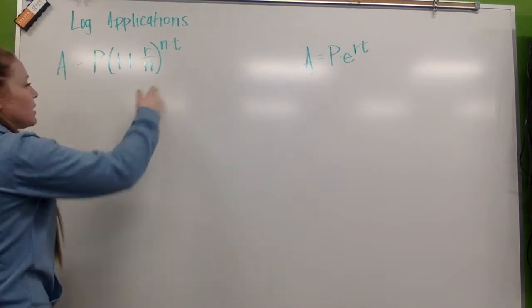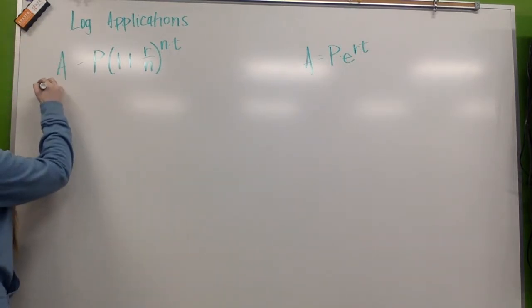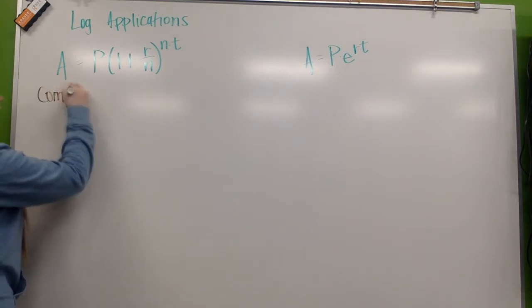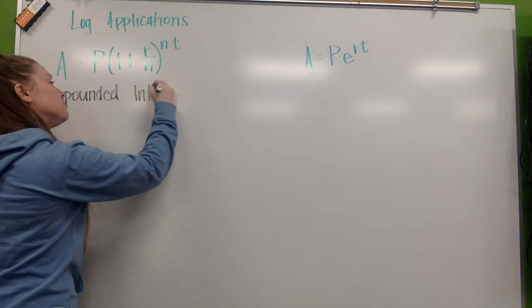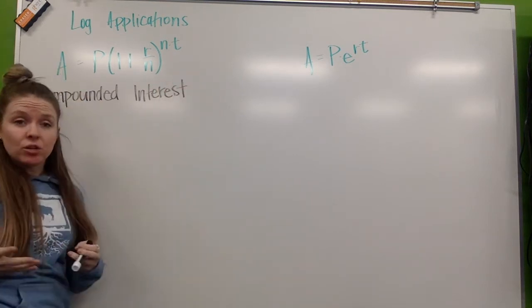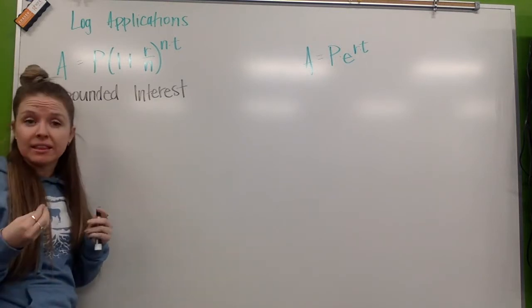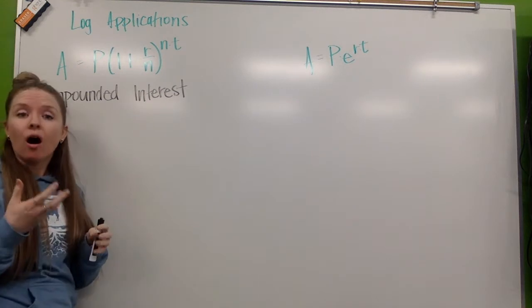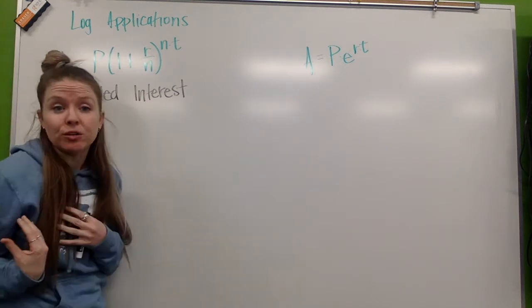So, we're going to start out here. This is our compounded interest formula. This formula talks about, say you invest money or you take out a loan. How do they calculate the interest that you have to pay on that loan amount or your investment amount? How much are you getting back?